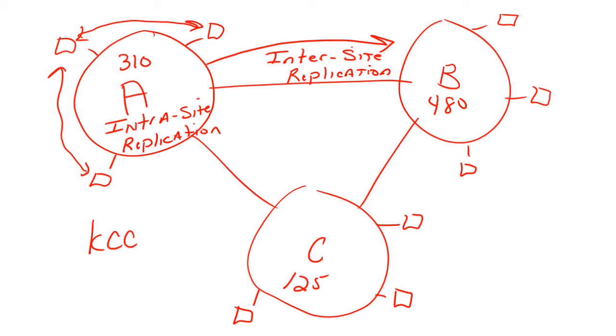What ends up happening is, when these sites talk to each other, when A talks to B, it says, Hey B, I got you down for 480. B says, Yep, that's my number. B says, Hey, I got you down for 295. A says, No, wait a minute, I'm at 310.